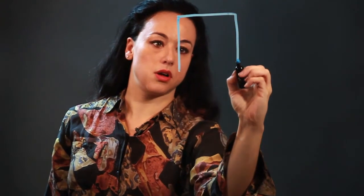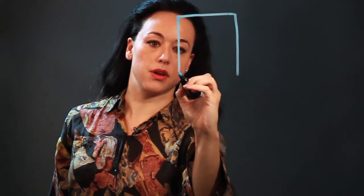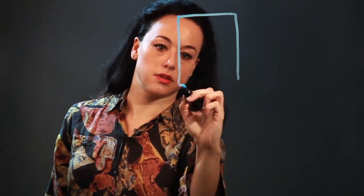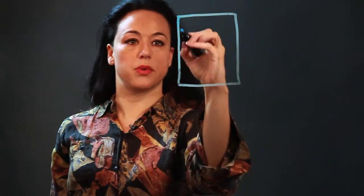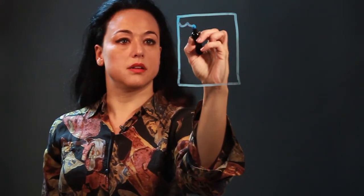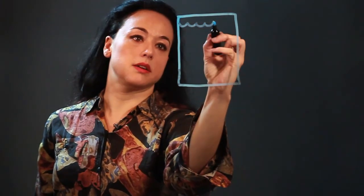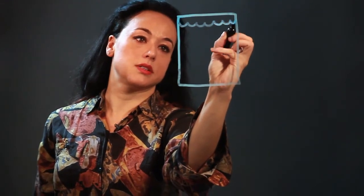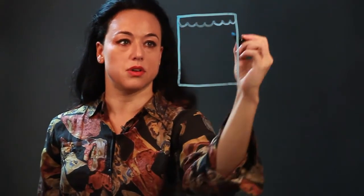I'm going to draw a window first, just making a rectangle. That's the shape of the window. And then this curtain has a valance on the top that is a series of crescent shapes, kind of like you're drawing the top of some water or something.